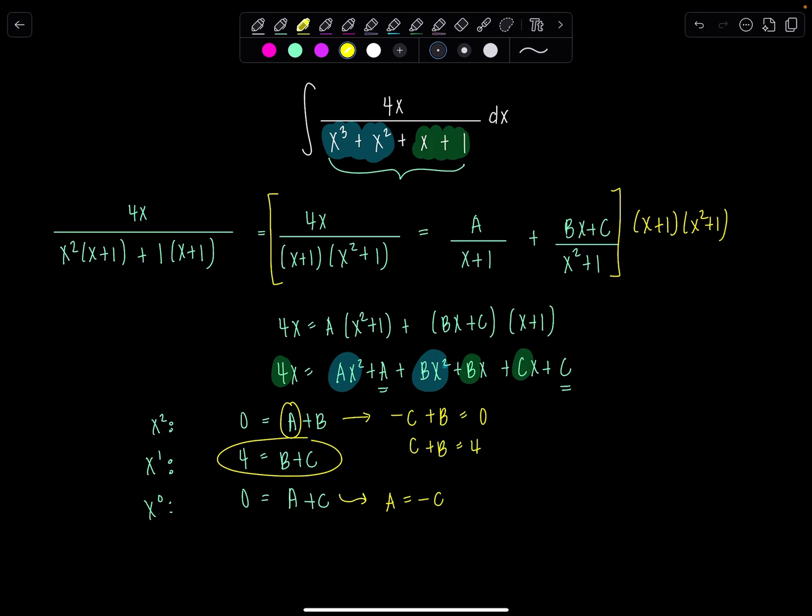And then let me rewrite this equation underneath strategically. So c plus b equals 4. And then if I add these two together, notice c cancels out, and I get 2b is 4. So b is 2.